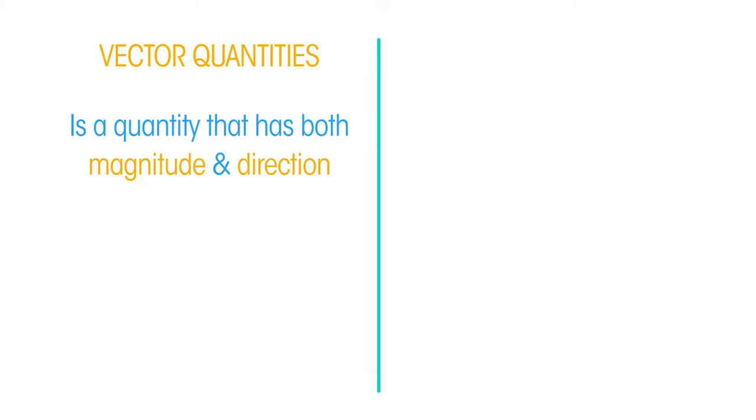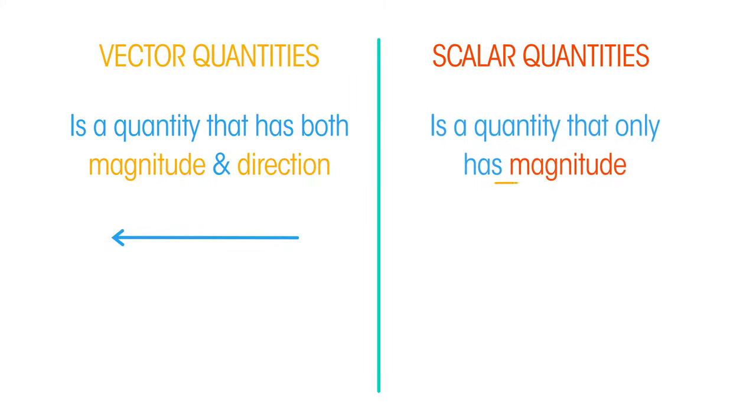Forces are vector quantities because they have both magnitude and direction and so can be represented by an arrow. Scalar quantities have only magnitude and no direction.